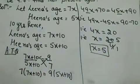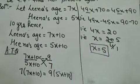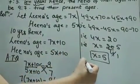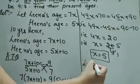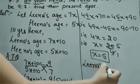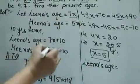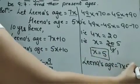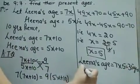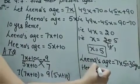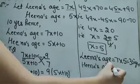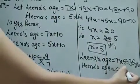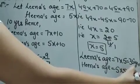X was supposed to be the multiplier for their ages. So Lina's age is 7X, that is 7 into 5, which is 35 years. And Hina's present age is 5X, that is 5 into 5, which is 25 years.